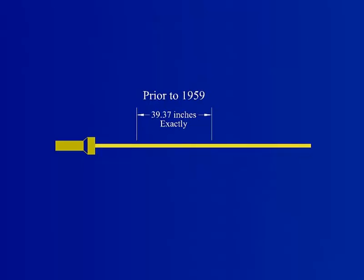This is because prior to the General Conference of Weight and Measures in 1960, the meter was exactly 39.37 inches.